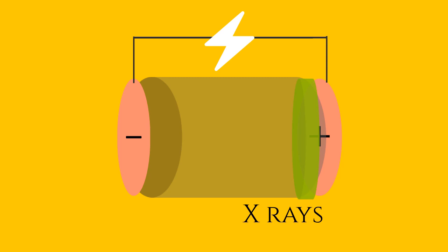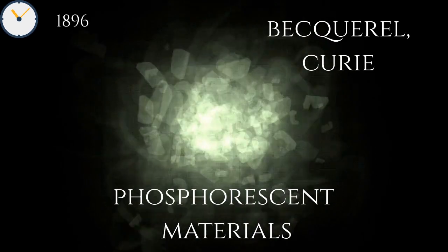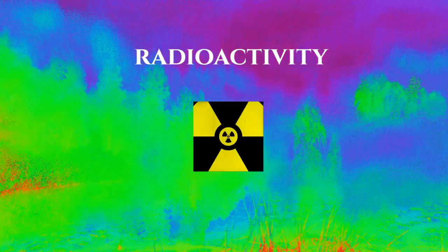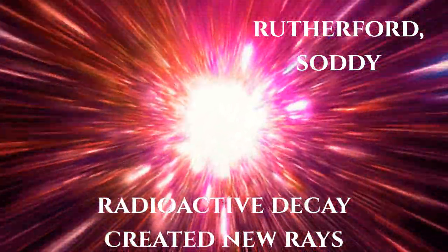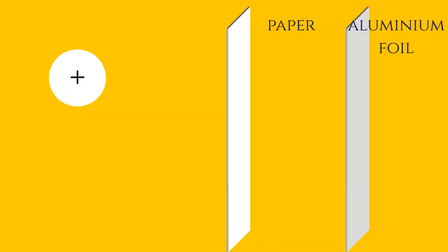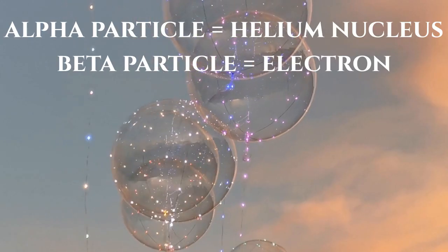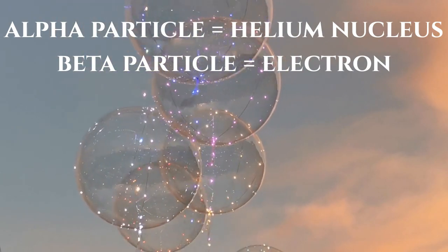The glow from X-rays in cathode ray tubes led Henri Becquerel and Marie Curie in 1896 to examine phosphorescent materials, and in the process they discovered radioactivity. Rutherford and his student Soddy realized that radioactive decay processes transformed one element into another and also created new rays. Some of the rays could be stopped by a sheet of paper, while some passed through paper but could be stopped by an aluminum sheet. Rutherford classified them as alpha and beta particles. We now know that alpha particles are helium-4 nuclei and beta particles are fast-moving electrons.